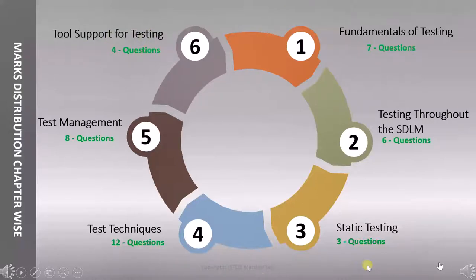By seeing this particular marks distribution, you must know which chapter you have to focus more. So tool support for testing and static testing contain very less marks, that is 3 and 4.